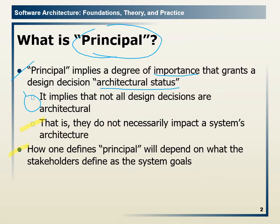How one defines 'principle' will depend on what the stakeholder defines as the system goal. We will know from the system's goals which design decisions are principle and which are not. For example, if the system's goal is to automate the employee's records, then staff security is relevant. Of course the system's security is relevant, but some aspects may not be principle. Relevant design decisions should be principle; irrelevant ones should not.